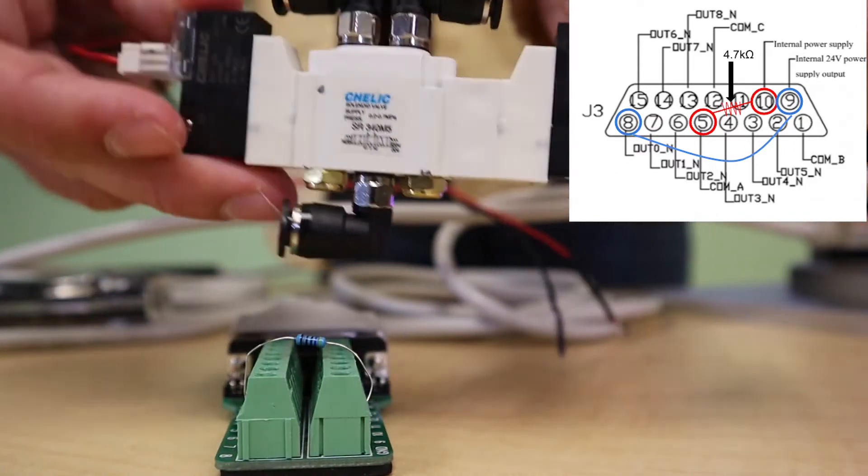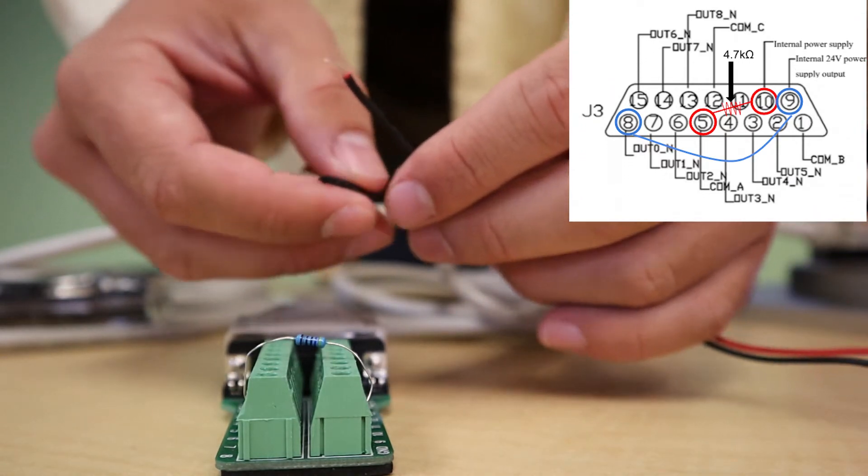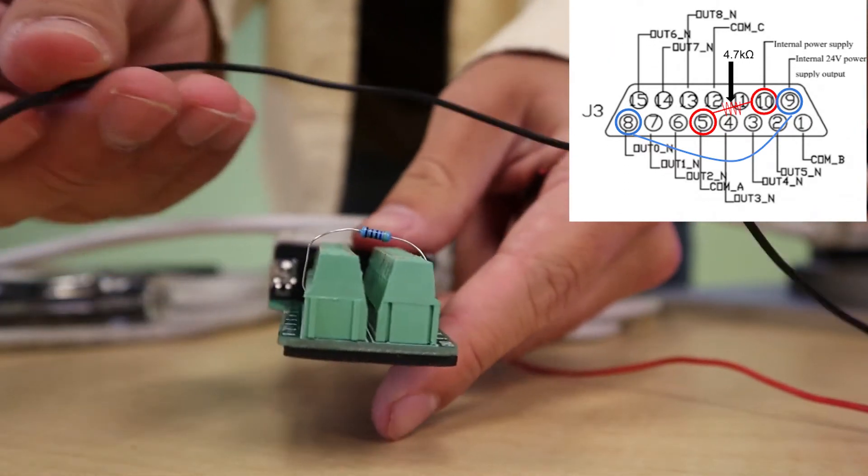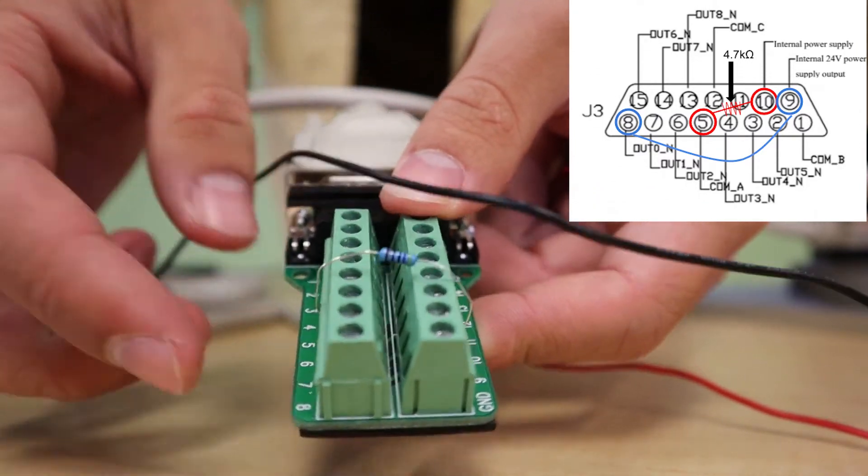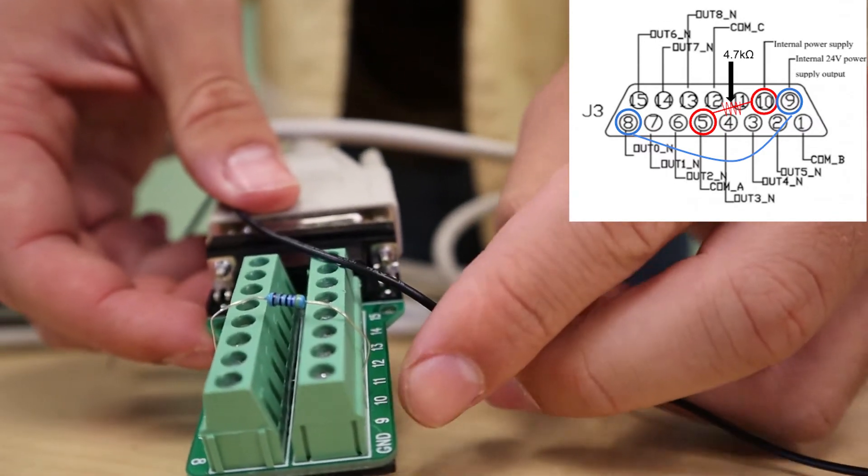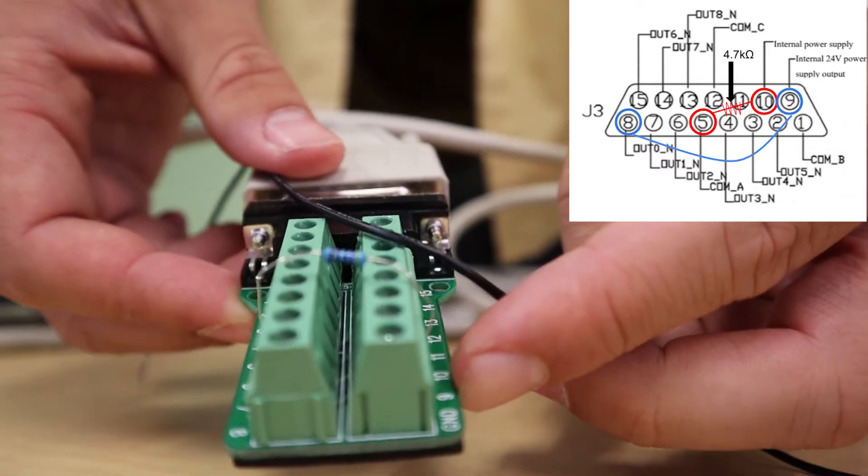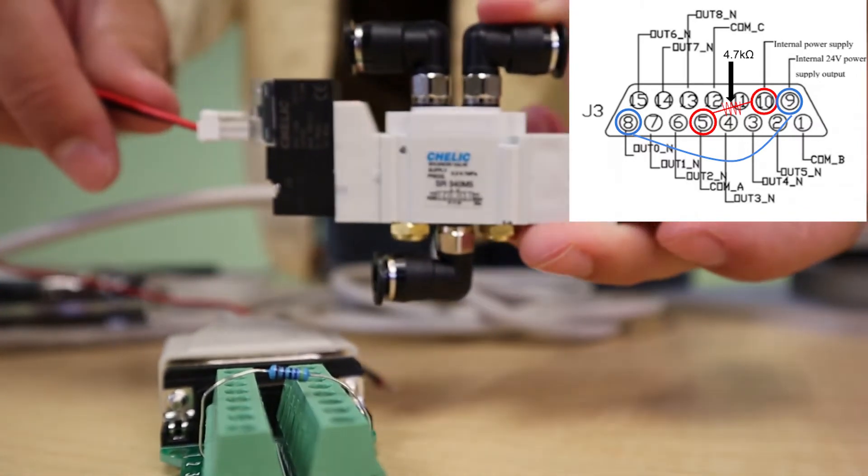If we want to connect a solenoid to the output, we'd have to connect the wires to the output of our choice. So if we want to use out 0, that would be pin 8, and then the other wire connects to pin 9 which is the internal 24 volt power supply since this is a 24 volt device.